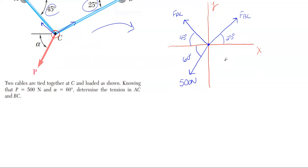If you're not sure what your next steps will be with equilibrium problems after drawing the free body diagram, a good starting point is using your summation equations — summing forces in the Y direction and summing forces in the X direction. Since we are in equilibrium and nothing is moving, the summation of forces in both the vertical and horizontal directions should all sum to zero.